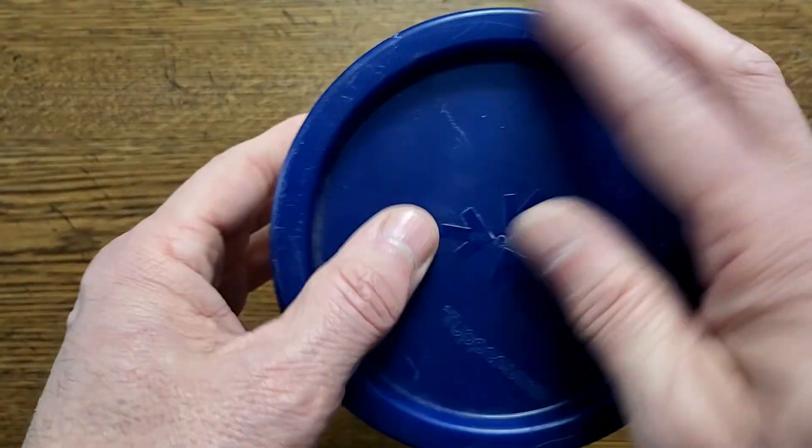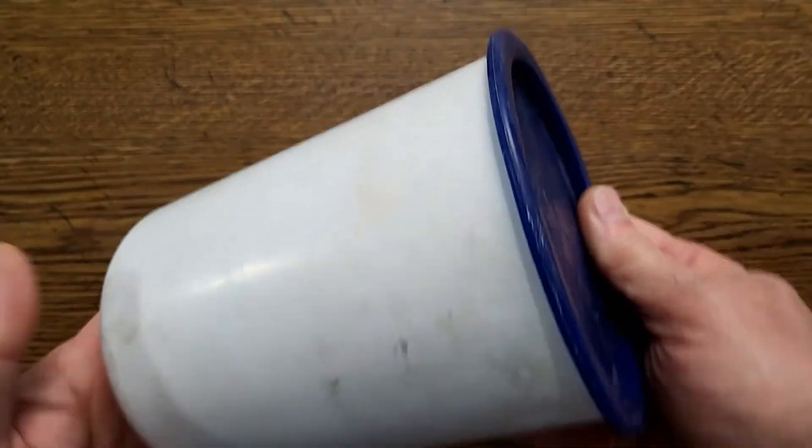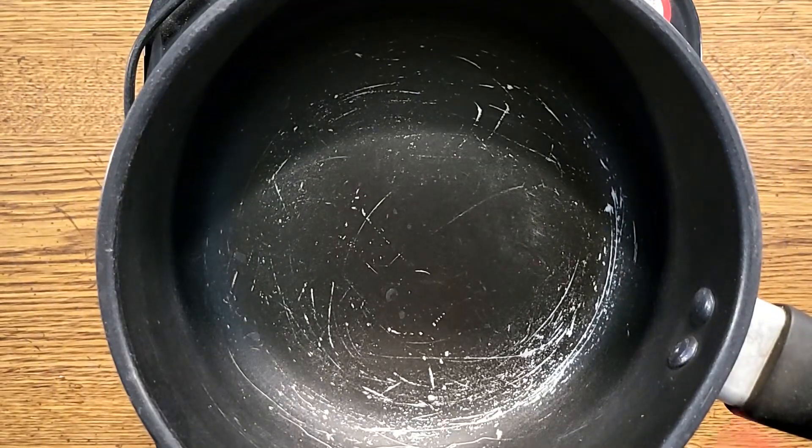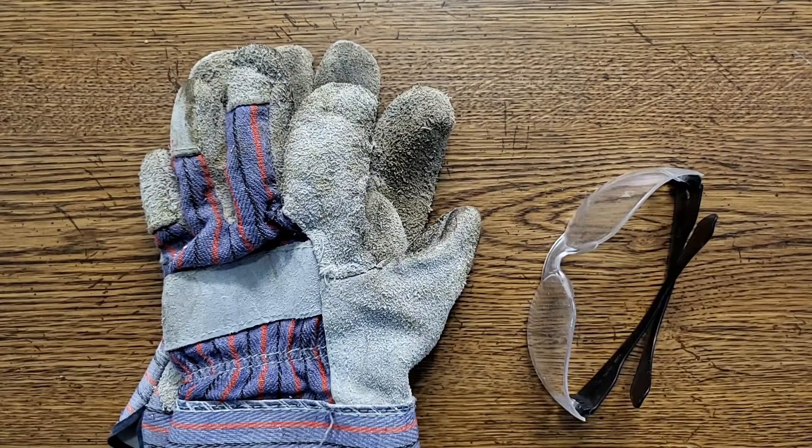A small mixing cup and spoon. A container with a tight fitting lid. An electric cooktop. Cooking pan. And spatula. A gram scale. An infrared thermometer. Gloves. And safety glasses.